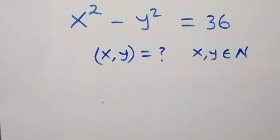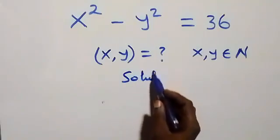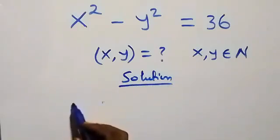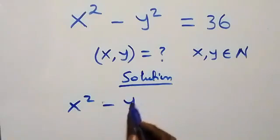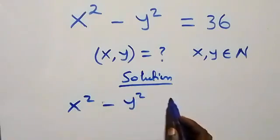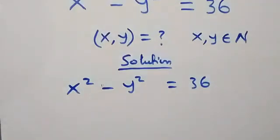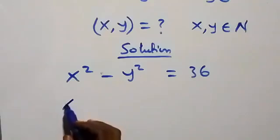Hello, you are welcome. How to solve this nice algebra problem? From what we are given, we have x squared minus y squared equals 36. Note that x and y are members of the natural numbers. Applying the difference of two squares here, we have: